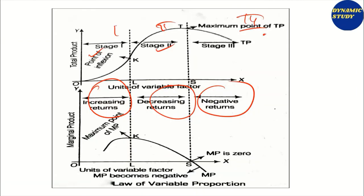I am doing this in a very quick manner — just a quick revision. I have discussed these in detail in the quiz session, so you can refer to that, or you can pause the video and try to understand on your own. To summarize: Stage 1 — marginal product increases; Stage 2 — it declines but is positive; Stage 3 — when marginal product is zero and then total product is decreasing, that is after the total product has reached its maximum.